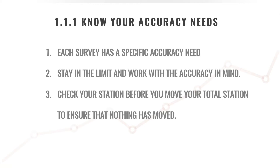The second point is to stay within the limit and work with the accuracy in mind. If you're behind a tunnel station and you measure a point, don't do it quickly — make sure the prism on the other side is properly bubbled and precisely correct if you've got a highly accurate job. If your tolerance is 50mm, you won't mind if somebody isn't holding it precisely on the bubble. But for a highly accurate survey, you want to get that prism as low as possible to the ground, using highly accurate prisms that are available.